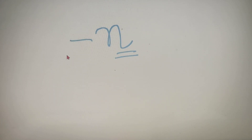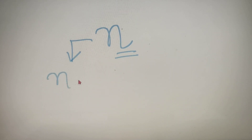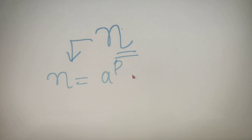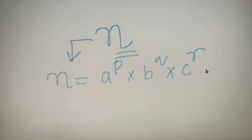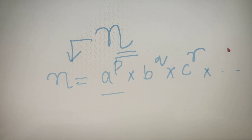So suppose you are given a number n and you have to calculate the number of factors of n. The first step is to prime factorize this number. Prime factorization is simply writing the number in terms of its prime factors. So suppose n is equal to a raised to the power p, into b raised to the power q, into c raised to the power r, and so on, where a, b, and c are prime numbers and p, q, and r are their respective powers.